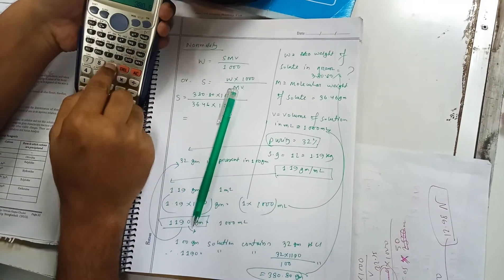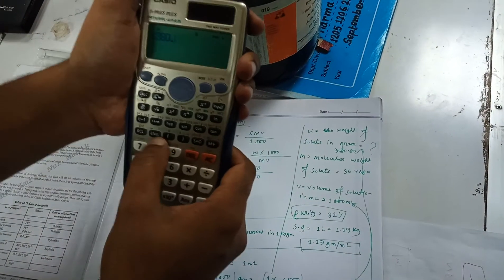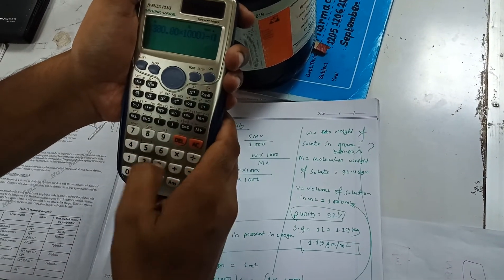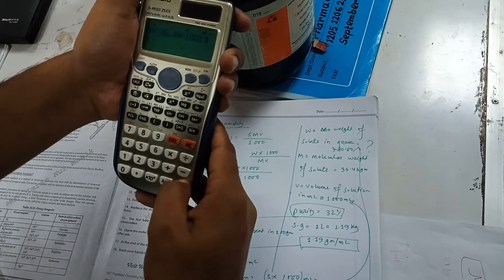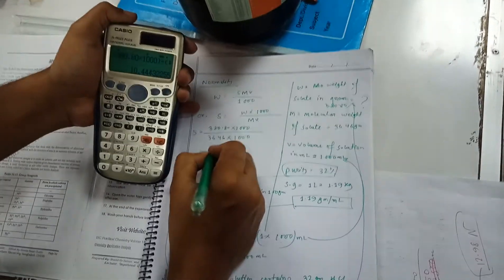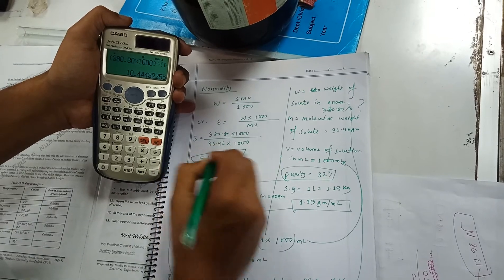And we will find that 380.80 times 1000 divided by 36.46 into 1000. This equals 10.44, this is the normality for this content.